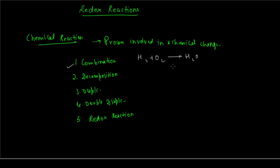Decomposition is the exact opposite of a combination reaction — when a compound, in the presence of some source of energy, decomposes or breaks into its constituent elements or two simpler substances. For example, when you heat calcium carbonate, you get calcium oxide and carbon dioxide gas. Here decomposition of calcium carbonate is taking place, and the reverse can also happen where calcium oxide reacts with carbon dioxide to form calcium carbonate.